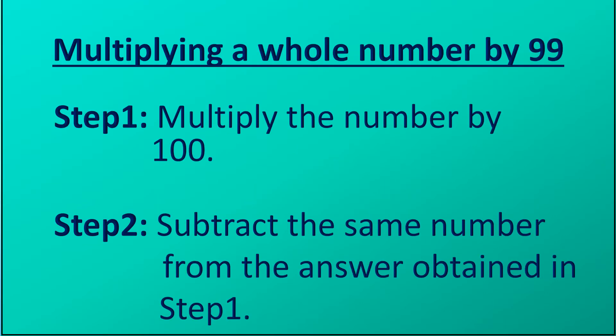First we will see how to multiply a whole number by 99. Step 1: multiply the number by 100. Step 2: subtract the same number from the answer obtained in step 1.